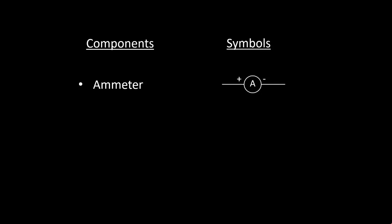Next component is an ammeter. An ammeter is an instrument that measures electric current in a circuit. It is always connected in series in a circuit through which the current is to be measured.